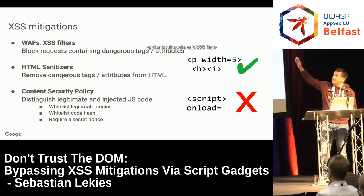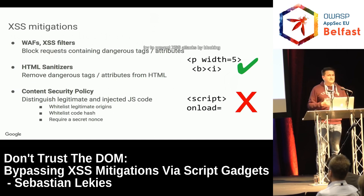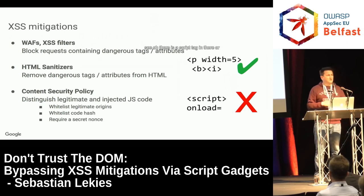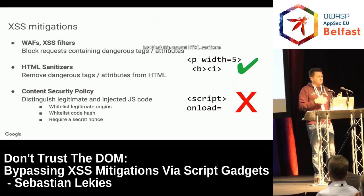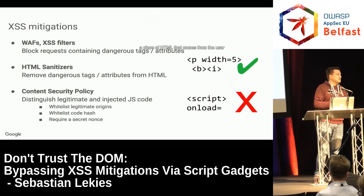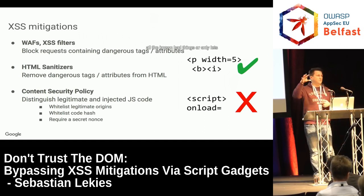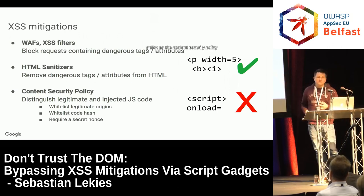Web application firewalls and XSS filters try to prevent XSS attacks by blocking maliciously looking requests. They look at the request and see, oh, there's a script tag in there or a JavaScript event handler, so let's just block this request. HTML sanitizers have a different approach: you have a piece of HTML from the user, you give it to the sanitizer, the sanitizer parses the HTML and tries to remove all the known bad things or only let through the known good things. The same is true for the content security policy.